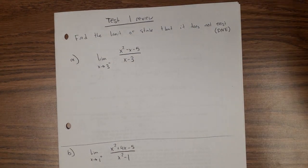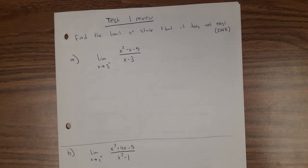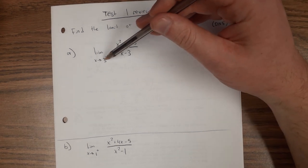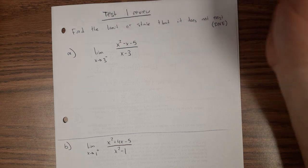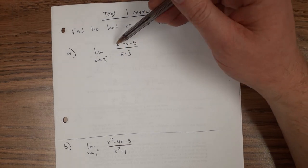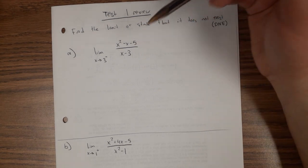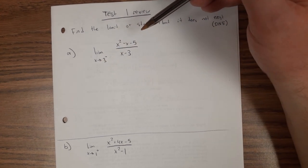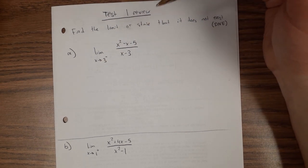Let's do a little review for the test. There are going to be several problems where the instructions say: find the limit or state that it does not exist. So let's do some like that. Here I have a limit as x goes to 3 from the left of this function — it's just a polynomial over another polynomial. The first thing you should do for an elementary function is just try to plug in the value of x and see if you get a valid answer.